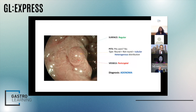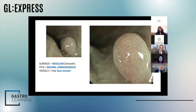Sometimes intuition tells you something is an adenoma because you've seen it lots of times before. But when you're trying to learn optical diagnosis, it is really important to have a structure. And by the same approach, this is a hyperplastic polyp.